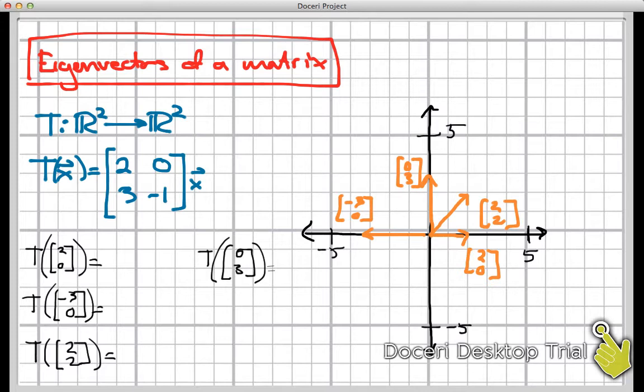So I have four sample inputs and I just like to compute their images under T. Those vectors are (2,0), (2,2), (-3,0), and (0,3). And over here on the right, you can see I've drawn each of these in orange on just a regular set of x, y axes in R². So let's do some computing first.